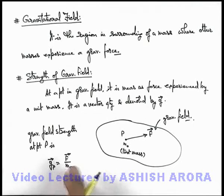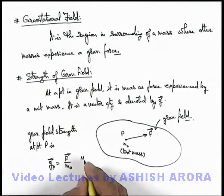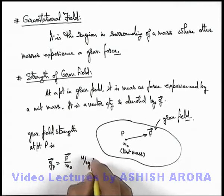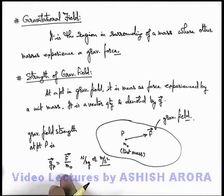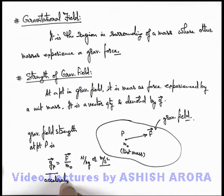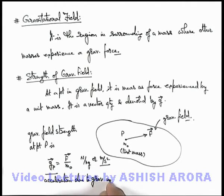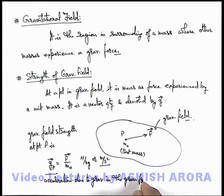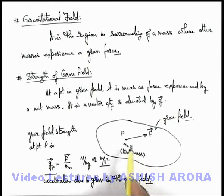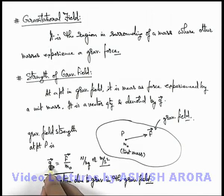So we can write that gravitational field strength at point P is given as g-P vector, which is written as F vector by m-naught. The units used for its measurement are newton per kilogram, or it is also written as meter per second squared, because force by mass is acceleration. And it is also termed as acceleration due to gravity in the gravitational field. That means the force experienced by a unit mass in the region of gravitational field at any point is the characteristic property of that point, which is denoted by g-P vector.